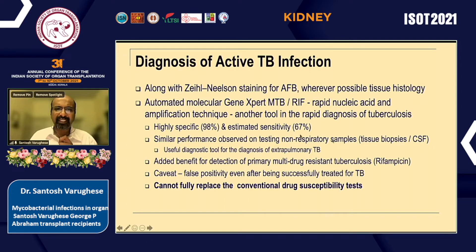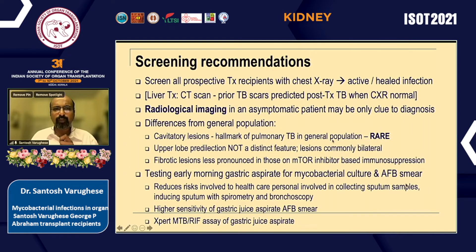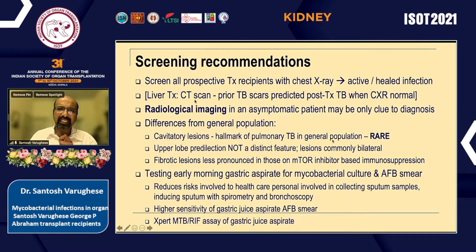The GeneXpert TB PCR has been found to be highly specific and sensitive, and is now used not only for respiratory samples but also for tissue specimens and CSF. It additionally shows support for identifying multidrug resistance. The caveat is it may be falsely positive after successful treatment and cannot replace conventional drug susceptibility testing. We screen all prospective transplant recipients with chest X-ray for lesions; some advocate CT scan, though that's not universal. One study in liver transplant patients showed CT scans revealing prior TB scars predicted post-transplant TB even when X-ray was normal.